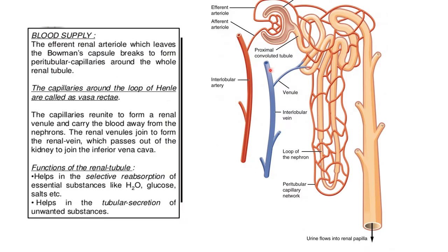The efferent renal arterioles leaving Bowman's capsule surround the renal tubule to form a peritubular capillary network. The capillaries around the loop of Henle are known as the vasa recta. These capillaries reunite to form the renal venule, which carries blood away from the nephron. The renal venules join to form the renal vein, which joins the inferior vena cava. The function of the renal tubule is selective reabsorption of essential substances like water, glucose, and salts, and tubular secretion of unwanted substances.